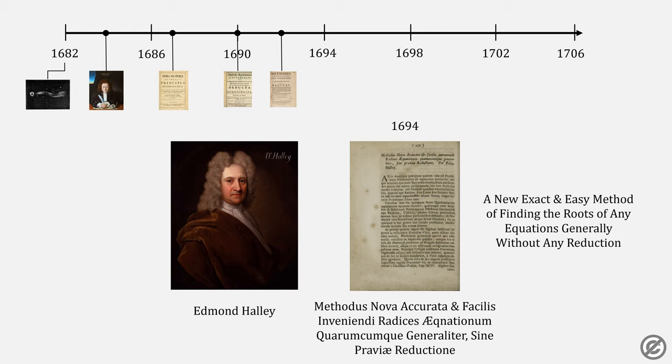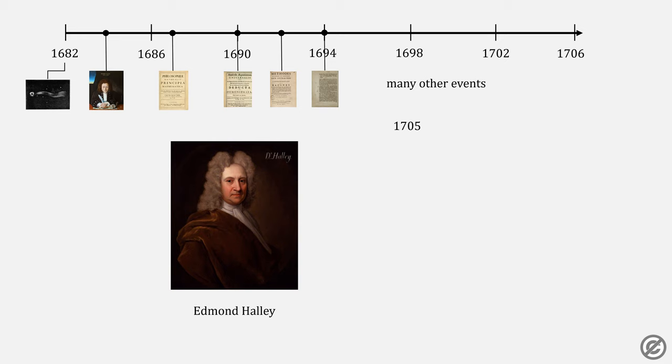In 1694, Halley published a new exact and easy method of finding the roots of any equation generally without any reduction, which we can now refer to as the basis of Halley's method. He built upon the work of Delanyi and Rapson.